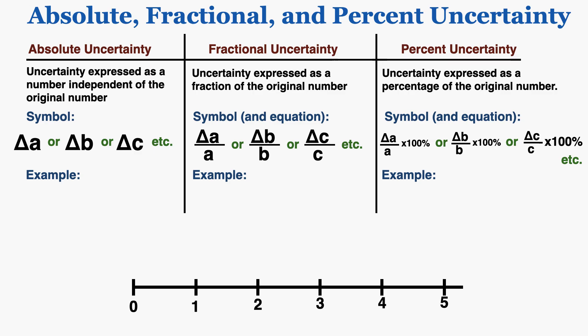Fractional uncertainty is uncertainty expressed as a fraction of the original number — it's delta over the original variable. Percent uncertainty is uncertainty expressed as a percentage of the original number, and you can see that symbol and equation written there.